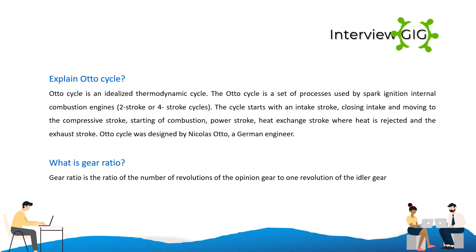What is gear ratio? Gear ratio is the ratio of the number of revolutions of the pinion gear to one revolution of the idler gear.